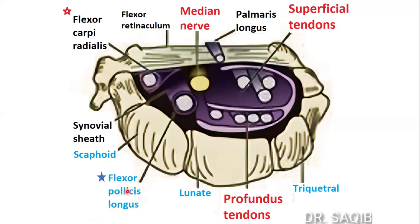The flexor pollicis longus passes under the carpal ligament, also known as the transverse carpal ligament. The flexor carpi radialis is outside the carpal tunnel, not among the contents being discussed within the tunnel itself.